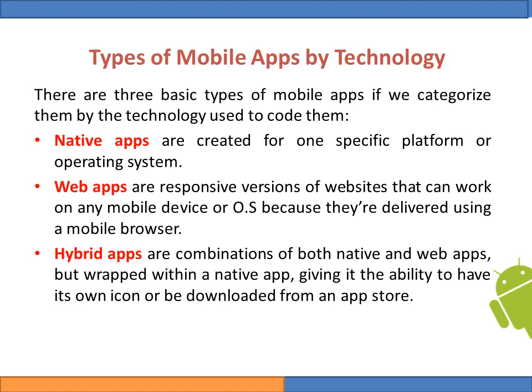The three types are native applications, web applications, and hybrid applications. Native applications are created for one specific platform or operating system. Web applications are responsive versions of websites that can work on any mobile device or operating system, delivered using a mobile browser. Hybrid applications are a combination of both native and web applications, wrapped within a native application, giving it the ability to have its own icon or be downloaded from an app store.